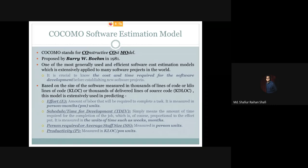This COCOMO model is extensively used in predicting the following four things: software project size, which is measured in thousands of lines of code or kilolines of code called KLOC, and also called thousands of delivered lines of source code or KDLOC, depending on the size of the software code.